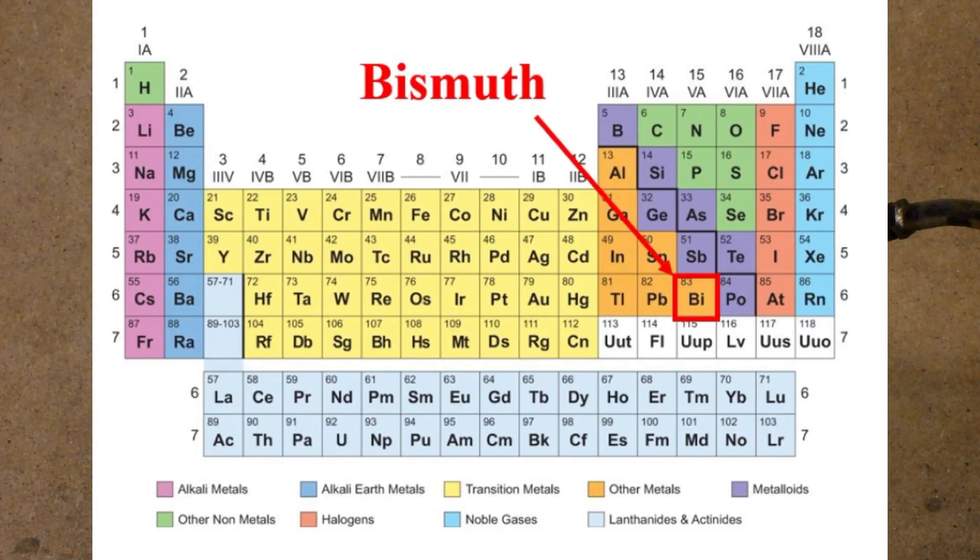Bismuth is positioned near the end of the periodic table with an atomic number of 83. Surprisingly, bismuth is an incredibly stable element with a half-life about a billion times the age of the known universe.